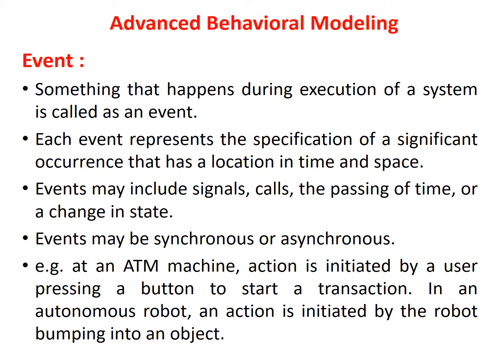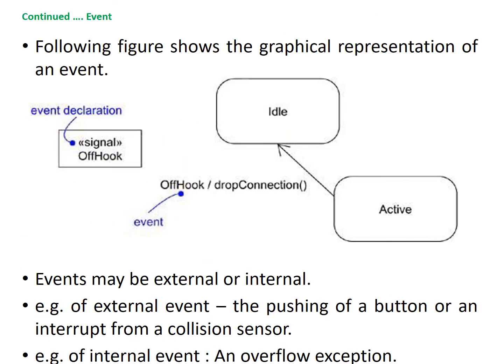At an ATM machine, an action is initiated by a user pressing a button to start a transaction. In an autonomous robot, an action is initiated by the robot bumping into an object. In UML, each thing that happens is modeled as an event. The UML provides a graphical representation of an event as shown in this figure. Here, the event is the off-hook event.